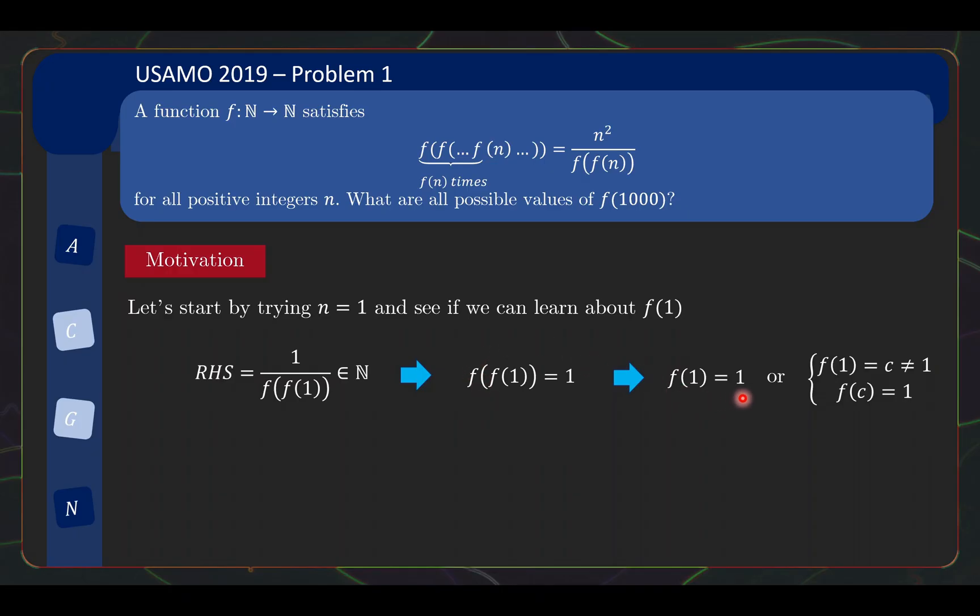Either f(1) is already equals to 1, so of course, then f(f(1)) is equals to 1. Or f(1) goes to something else that is not 1, let's call that c, and then f of c brings it back to 1. So 1 gets mapped to c, c gets mapped to 1. Now, can the second scenario happen? Well, the easiest way to get a contradiction is if you sub in n equals c back to the equation. Now, the right side is very simple, it's just c squared, and then c goes to 1, 1 goes back to c, so f(f(c)) is just c here.